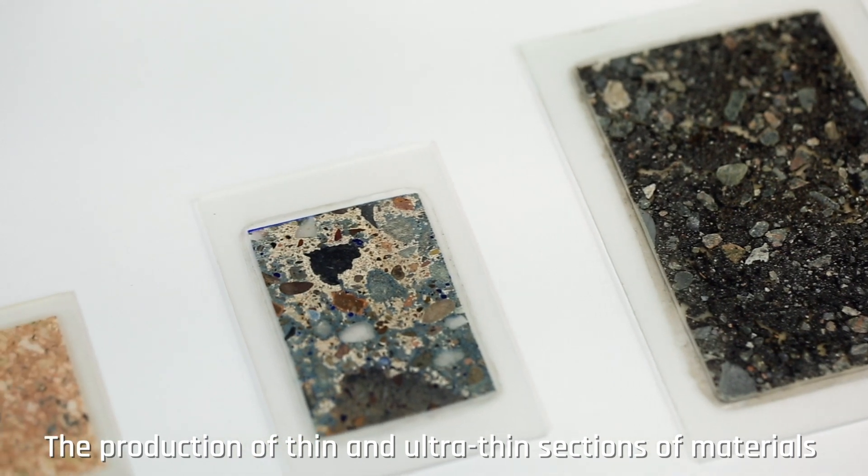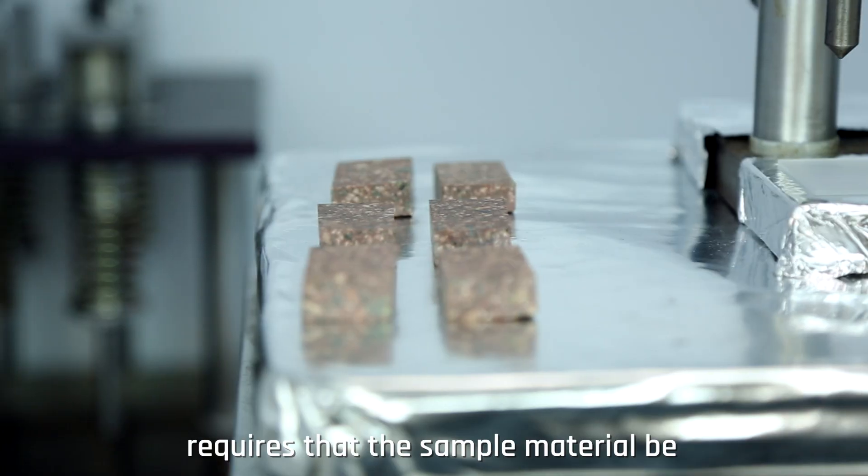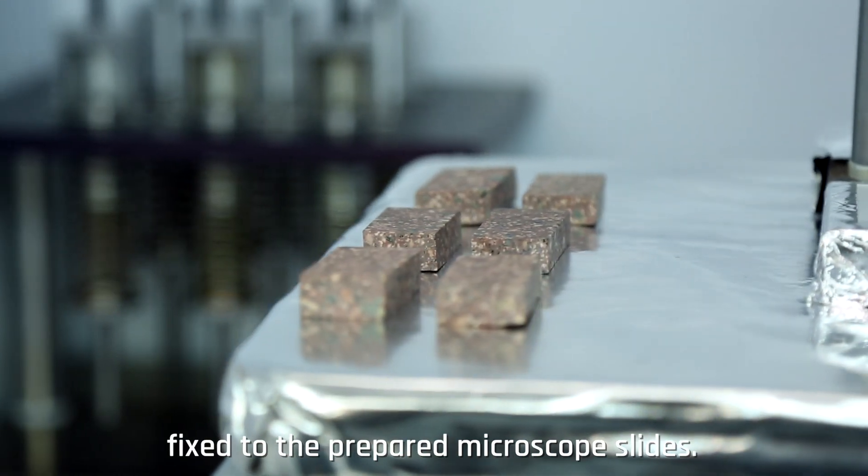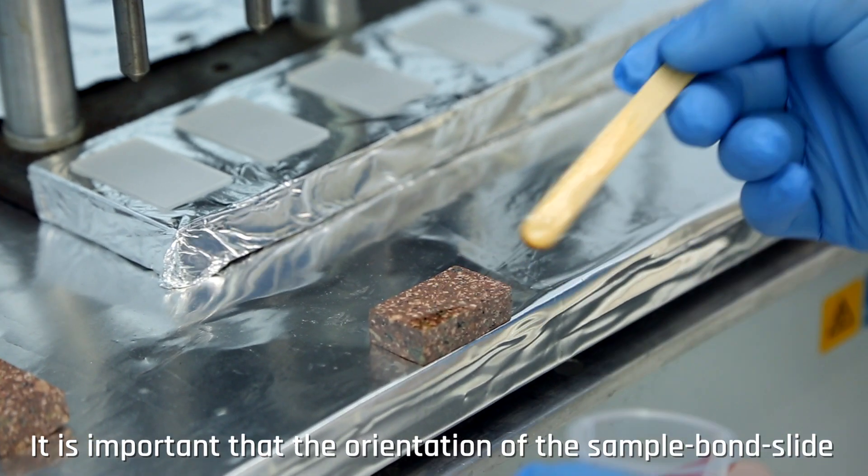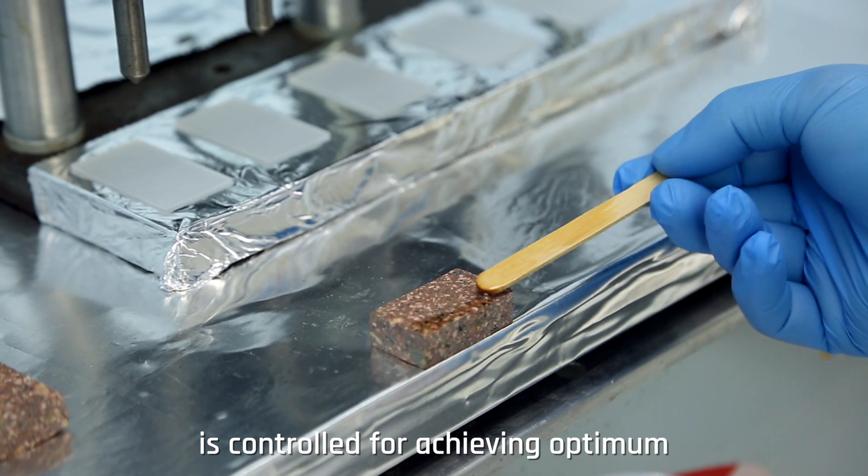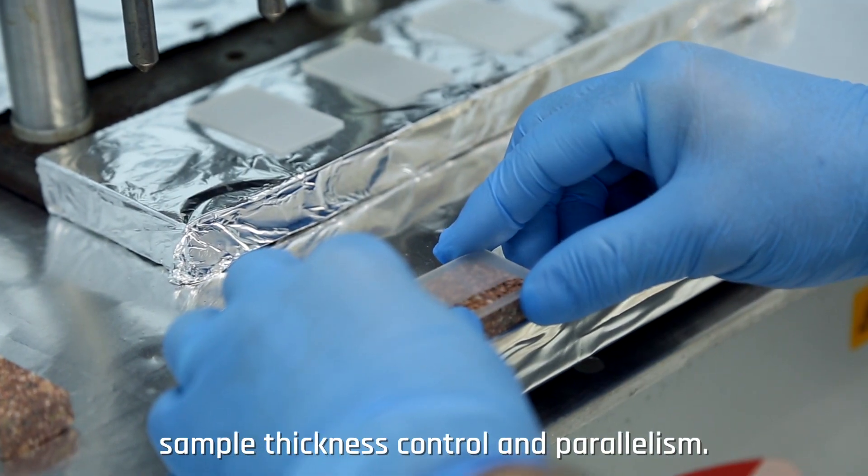The production of thin and ultra-thin sections of materials requires that the sample material be fixed to the prepared microscope slides. It is important that the orientation of the sample bond slide is controlled for achieving optimum sample thickness control and parallelism.